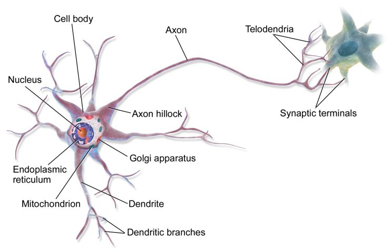The neuron doctrine is the fundamental idea that neurons are the basic structural and functional units of the nervous system. The theory was put forward by Santiago Ramón y Cajal in the late 19th century. It held that neurons are discrete cells, not connected in a meshwork, acting as metabolically distinct units. Later discoveries yielded refinements to the doctrine — for example, glial cells, which are not considered neurons, play an essential role in information processing. Also, electrical synapses are more common than previously thought, comprising direct cytoplasmic connections between neurons.